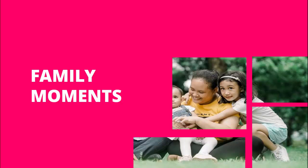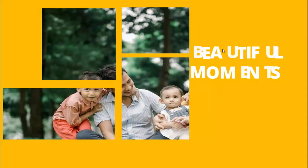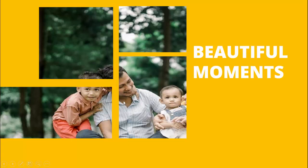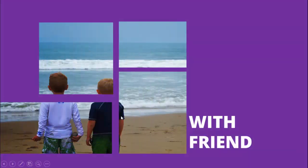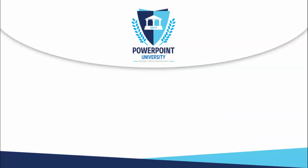In today's tutorial I'm going to show you how to make your presentation more interesting using morph transition effects. This is how it looks — I've added one image, a family image, then some family movements with a pink color background. When I click, it moves to the other side, shows the image on the left, and the text does beautiful movements. Again when I click it will show a different image — you can see a beach time with friends. You can make it fully automated without using the mouse click also.